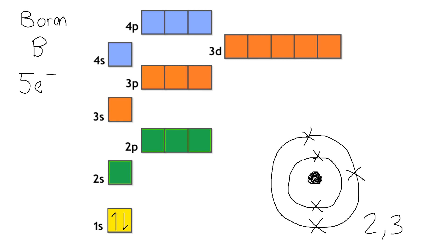So it's 1s2, then 2s2 — that's four electrons used — and then one electron goes into the 2p. Each of these boxes represents an orbital. So the electron configuration for boron would be 1s2, 2s2, 2p1 — or 2, 3 if you're using the Bohr method.